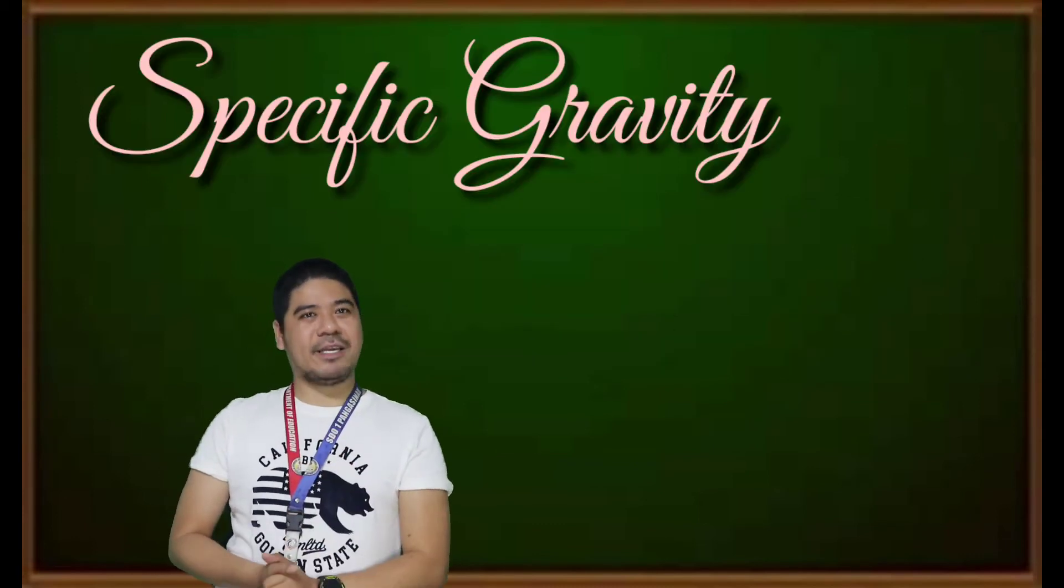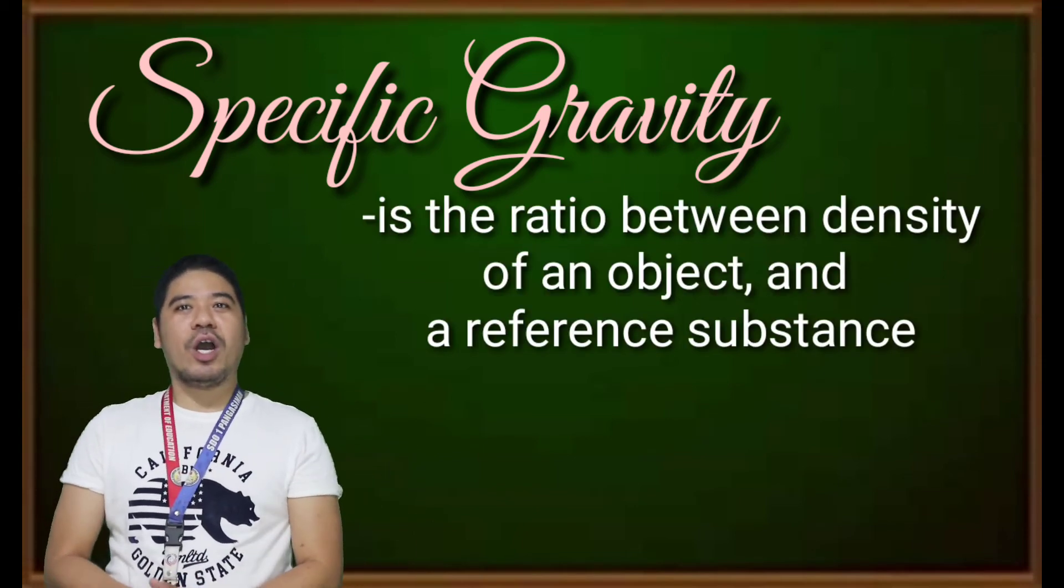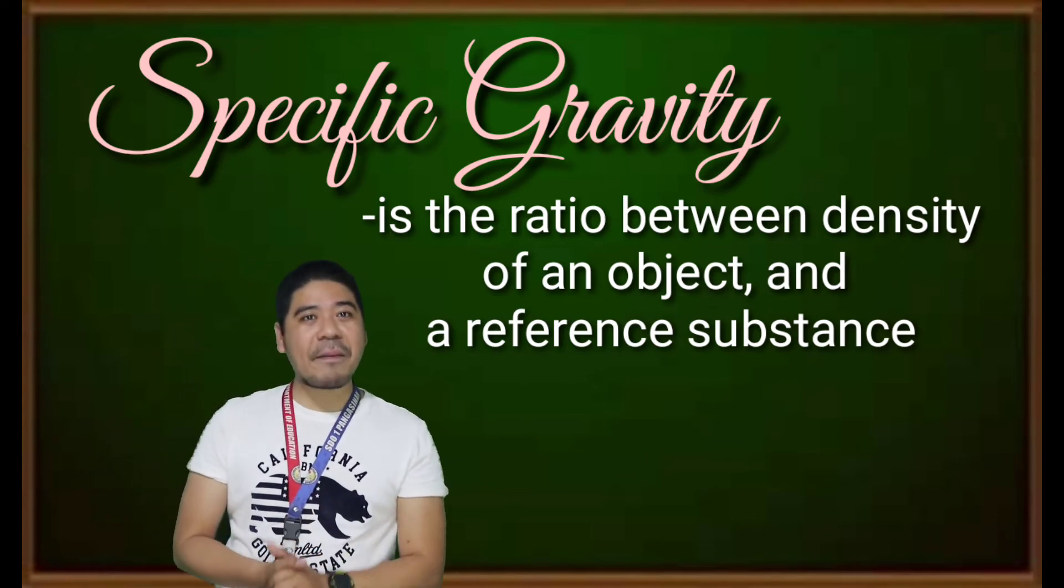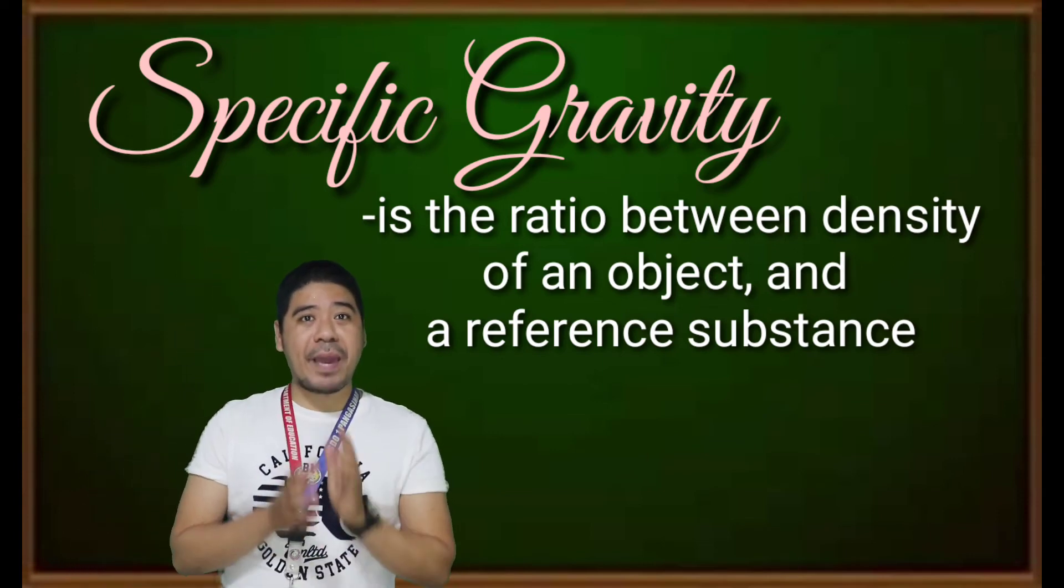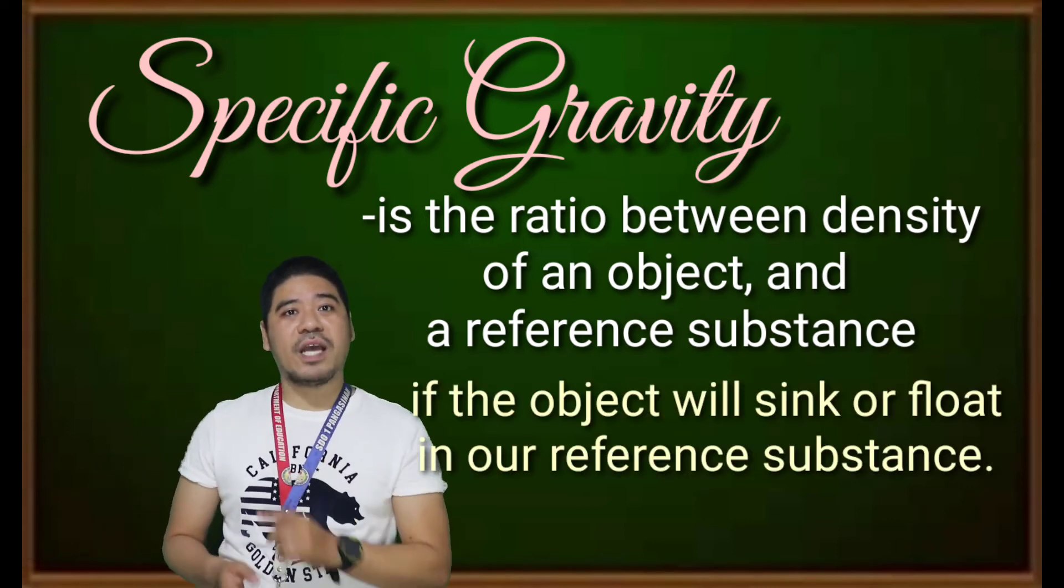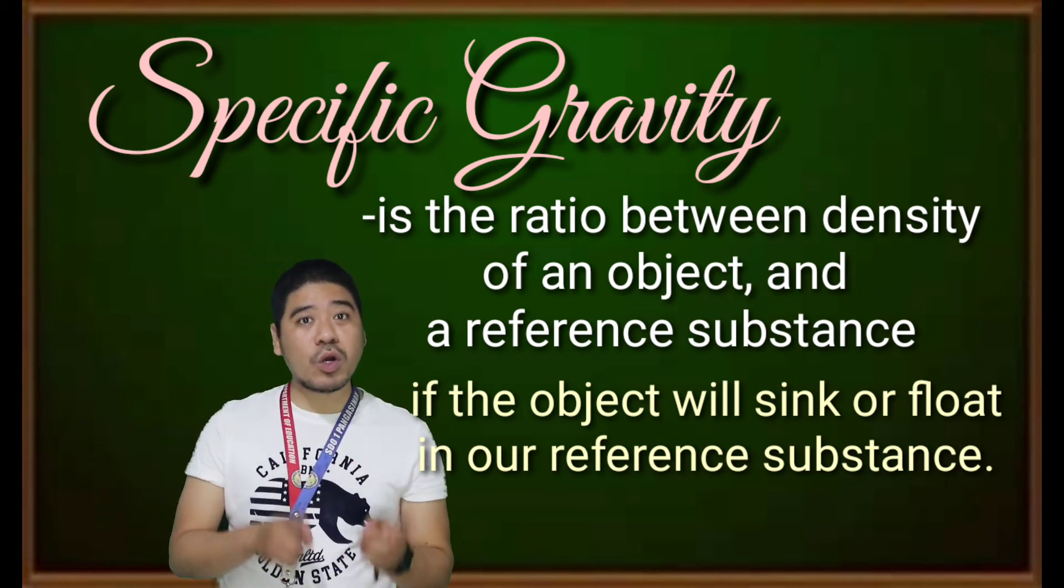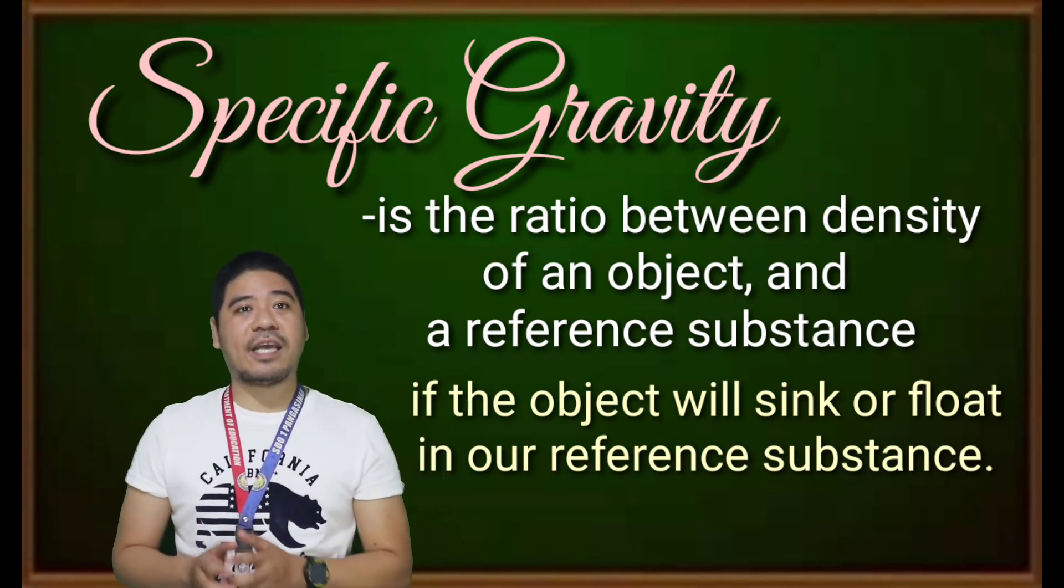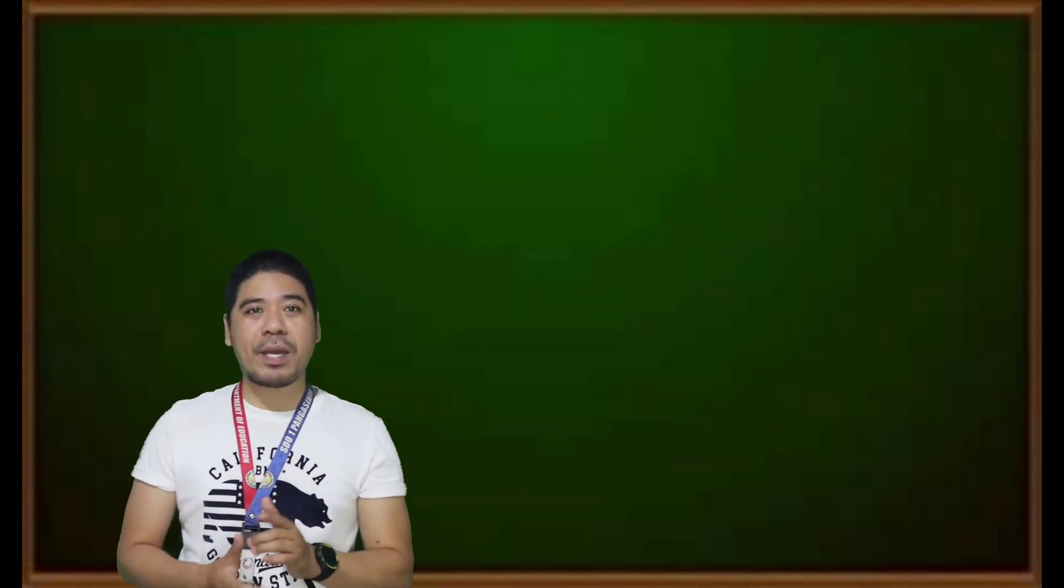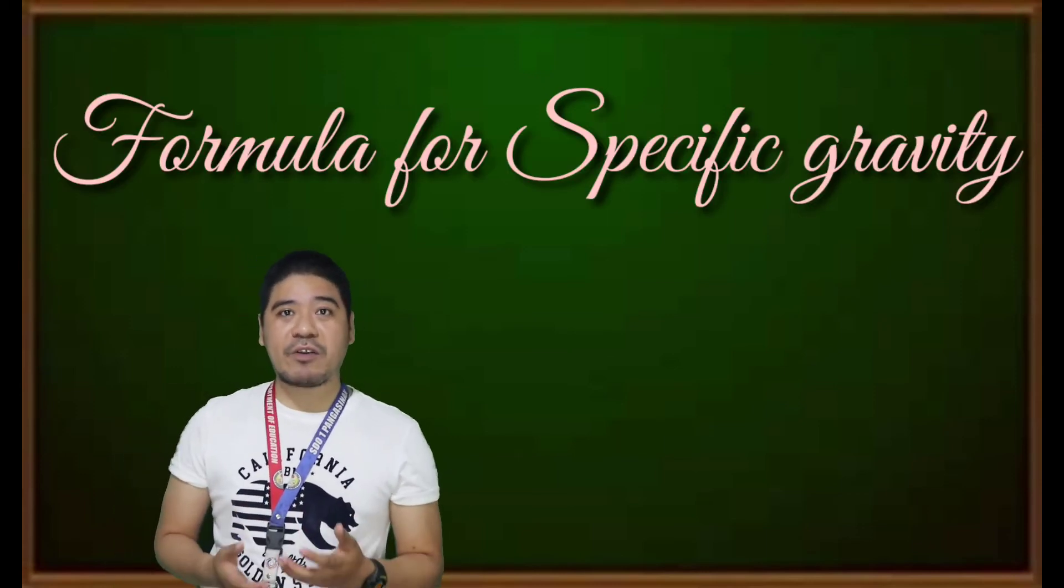And now, what is specific gravity? The specific gravity is the ratio between the density of an object and a reference substance. The specific gravity can tell us, based on its value, if the object will sink or float in our reference substance. Usually, our reference substance is water, which always has a density of 1 gram per milliliter or 1 gram per cubic centimeter. At this time, let's discuss the formula for specific gravity.